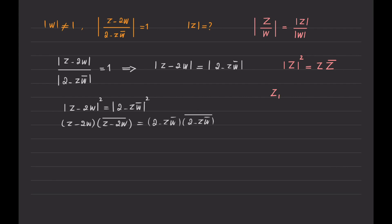We have useful formulas for conjugates. If I have z1 minus z2 and I want to take the conjugate of this difference, I can do it separately — take the conjugate of the first and subtract the conjugate of the second. We also know that if I conjugate a complex number twice, it returns to the original. For multiplication, the conjugate of z1 times z2 equals conjugate of z1 times conjugate of z2 — it doesn't matter if you multiply first then conjugate, or conjugate separately then multiply.